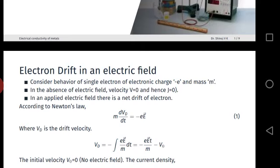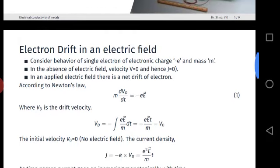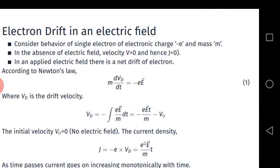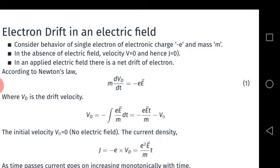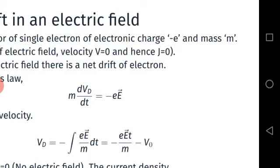Metals are very good conductors. Let us consider the behavior of a single electron of charge minus e and mass m. In the absence of an electric field, electrons move freely inside the metal, but the net velocity is zero because of random motion. Since velocity v equals zero, the current density j equals charge times velocity, that is minus e times v, which is zero.